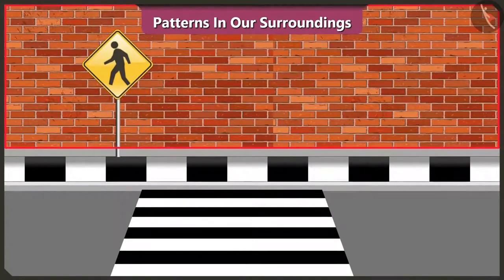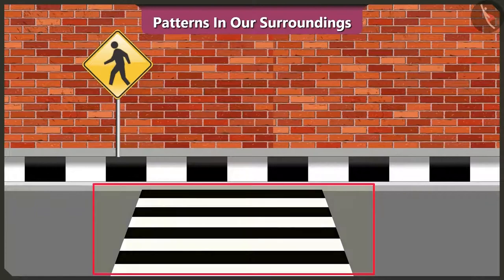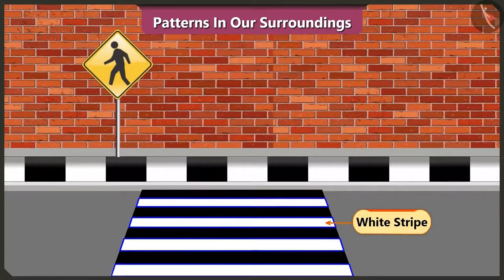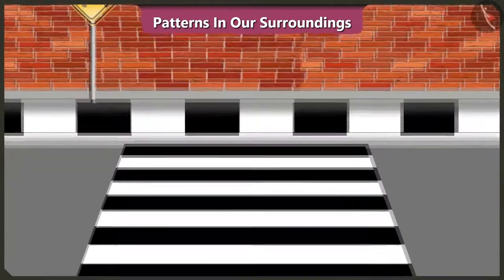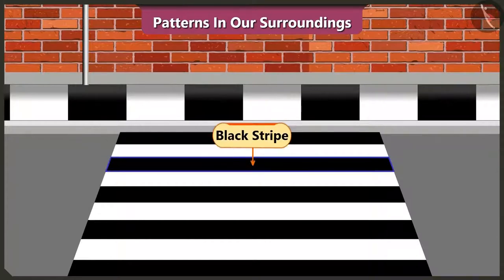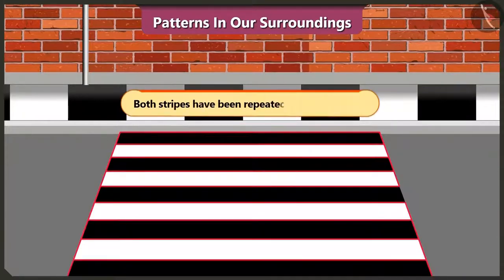Vinny, look at this wall. This wall has a pattern made of bricks. Oh yes. Now look, this zebra crossing has a pattern of black and white stripes. Yes, this pattern has black, white, black, white lines — both black and white color lines have been used repeatedly.